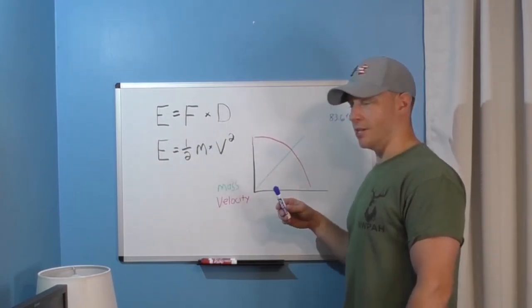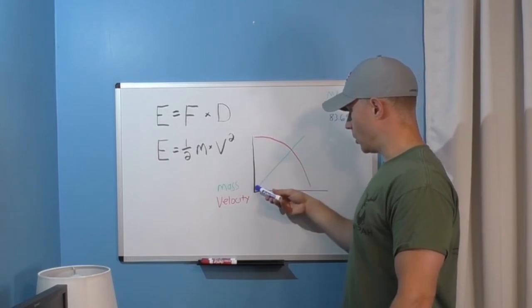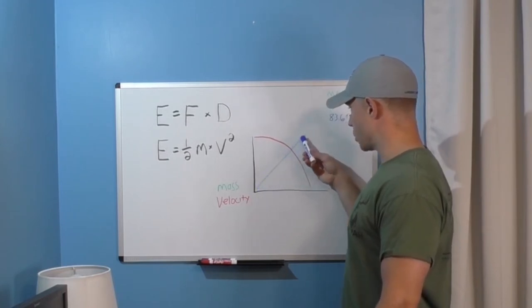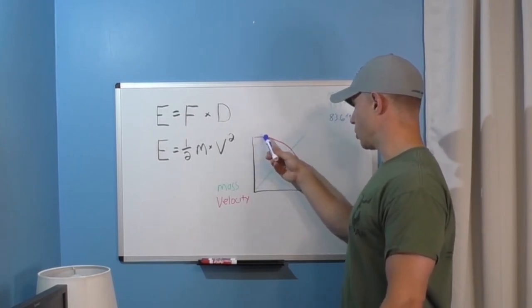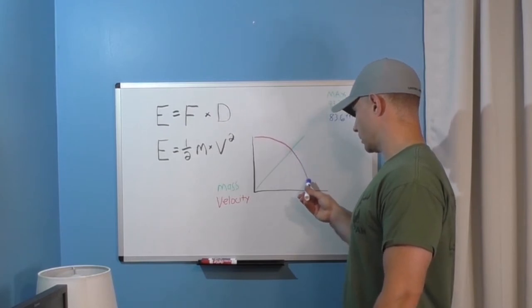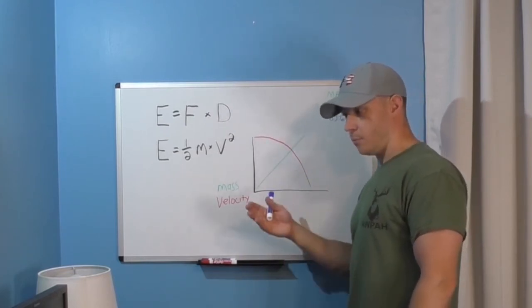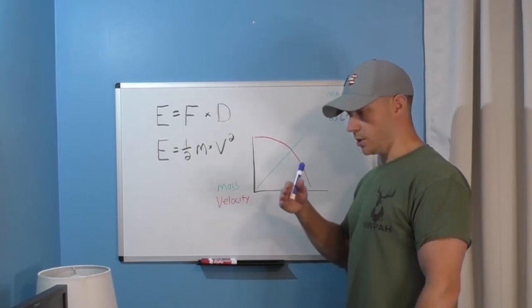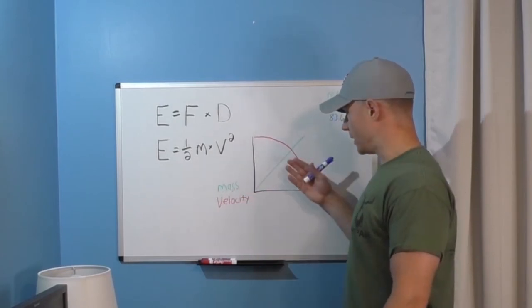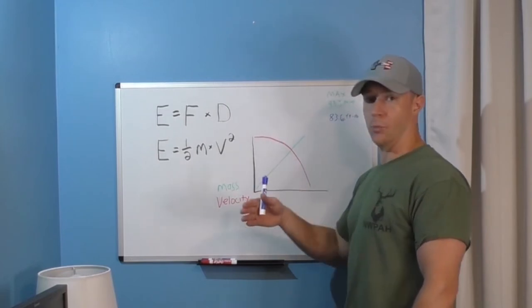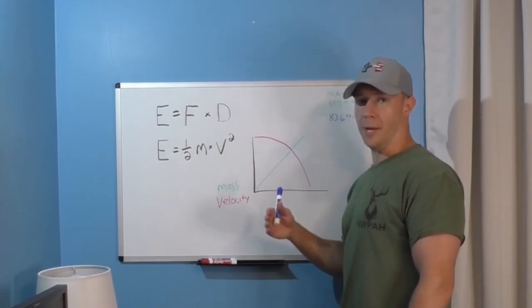So this is a graphical representation of what that means. So as your mass goes up in a straight line your velocity drops off quicker and quicker. Now why this is important is because as you go up an arrow weight just a little bit your velocity isn't affected only a little bit and may be affected quite a bit more.